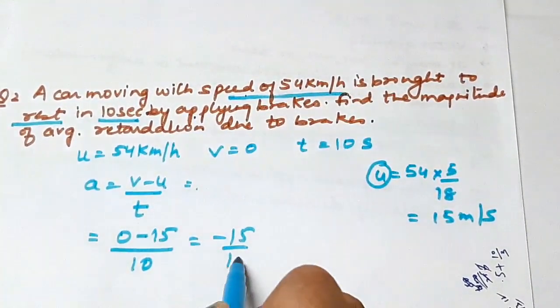The first numerical: a train starting from a railway station and moving with uniform acceleration attains a speed of 40 km per hour in 10 minutes. In this case, it's starting from the railway station, that is, initially it is at rest. So the initial velocity u is zero, and it is moving with uniform acceleration.